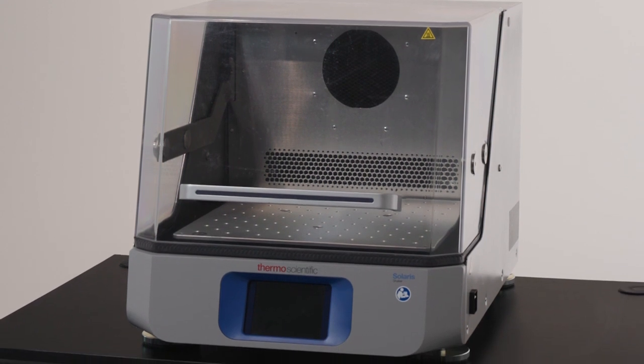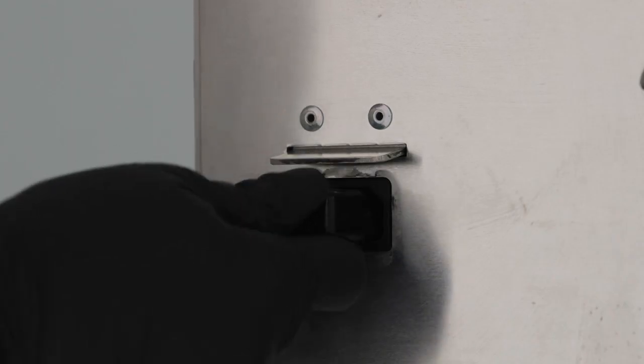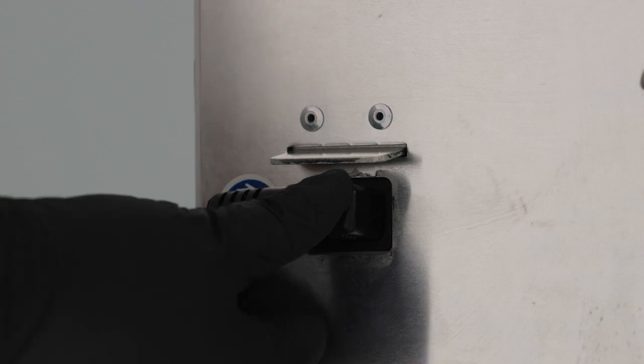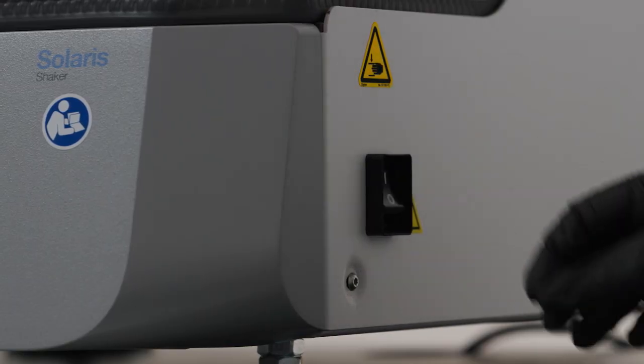When the shaker is in position and level, plug the power supply cable into an outlet and turn on the power supply switch along the right side.